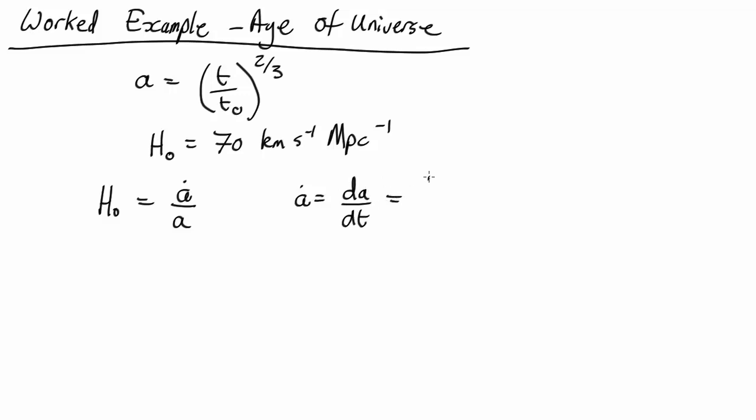We've got a constant, which is just 1 over t₀ to the two-thirds, so we take that out. So now we've got t to the two-thirds, which we need to differentiate.